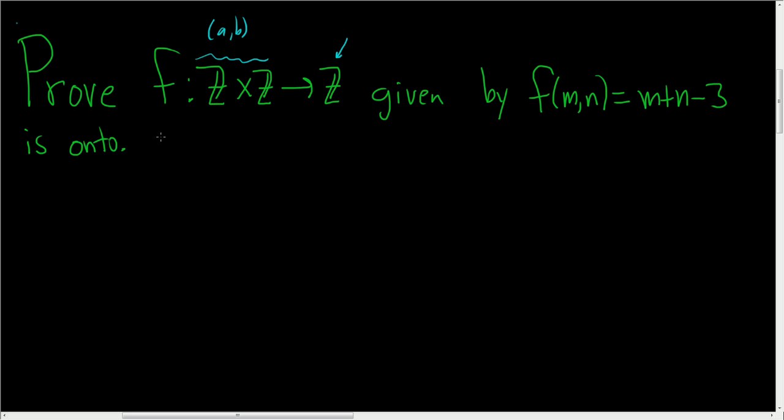So before we do the proof, recall that a function f from capital X to capital Y is called onto or surjective if for all little y in capital Y, this is called the co-domain, there exists an x in capital X, this is called the domain, such that f takes little x and sends it to y.